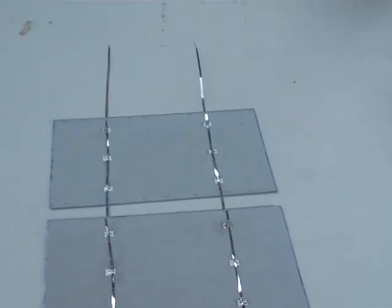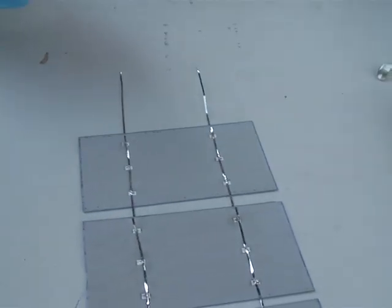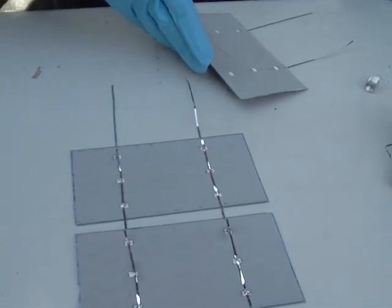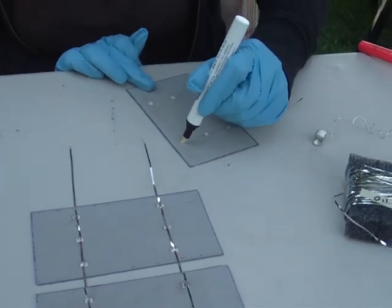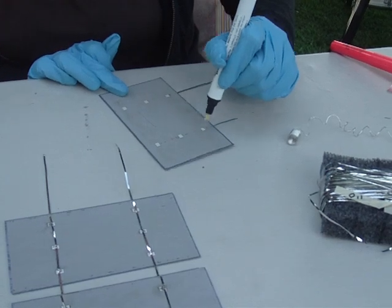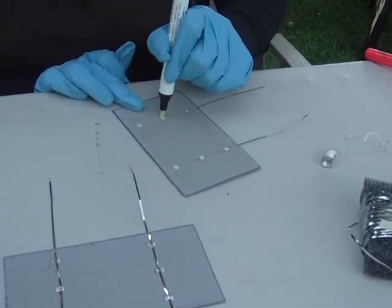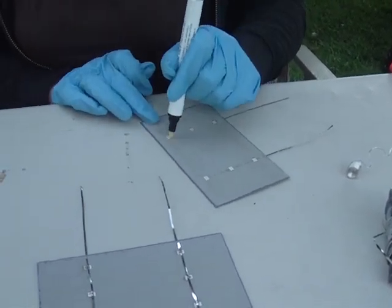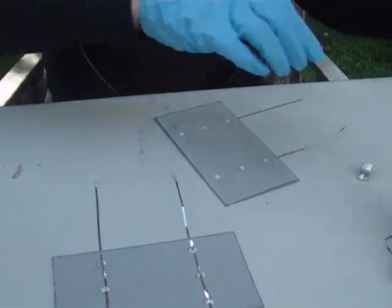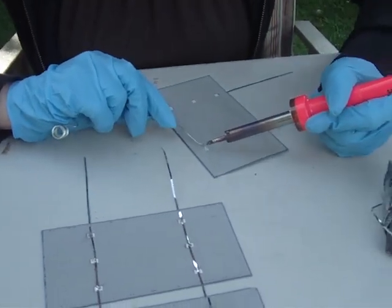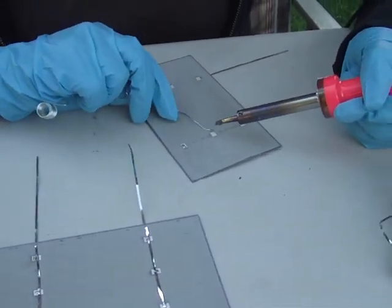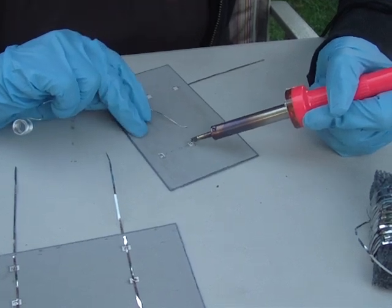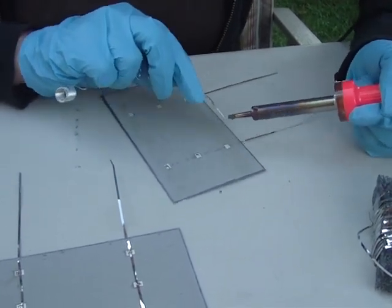All right, I'm going to start the next one here, just want to do a little bit of flux on the back. Take your soldering wire and just drop a little tab there. You just need a very little bit, just enough to get your wires to stick to the back of your cell.